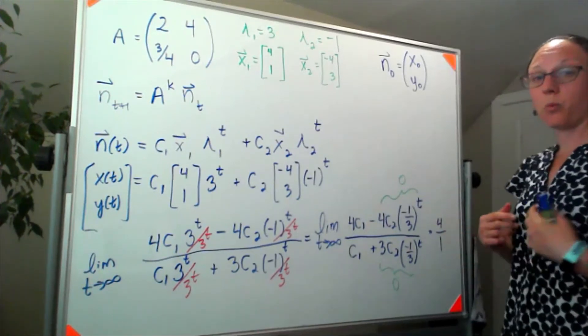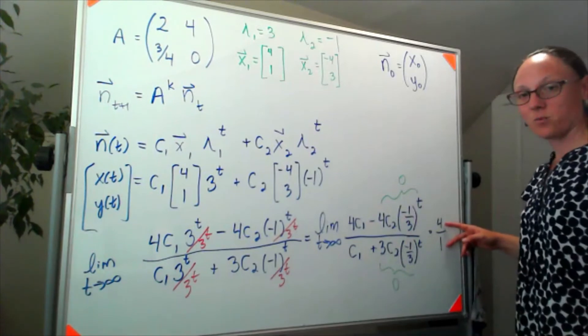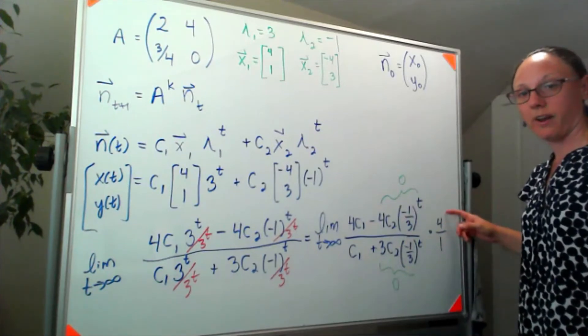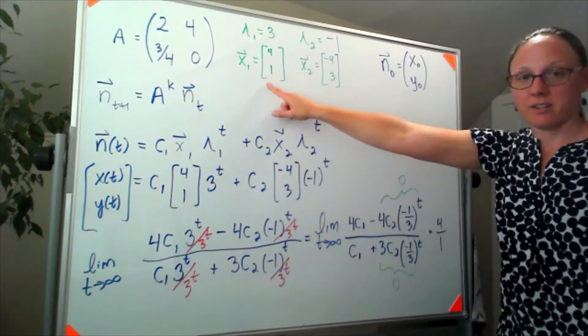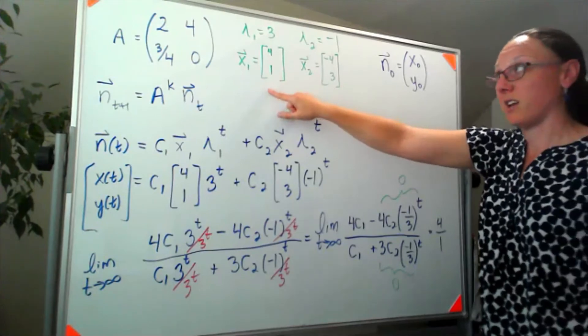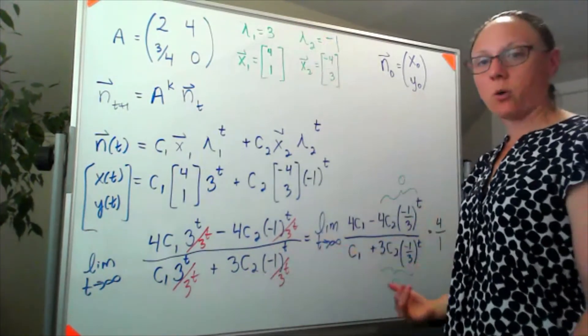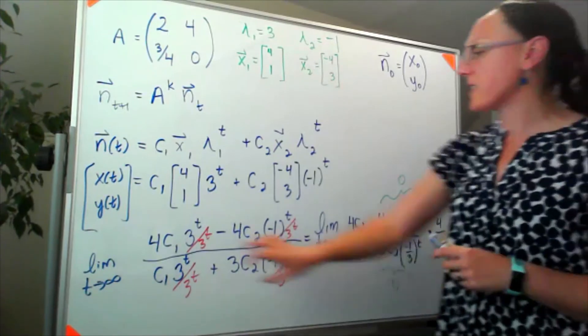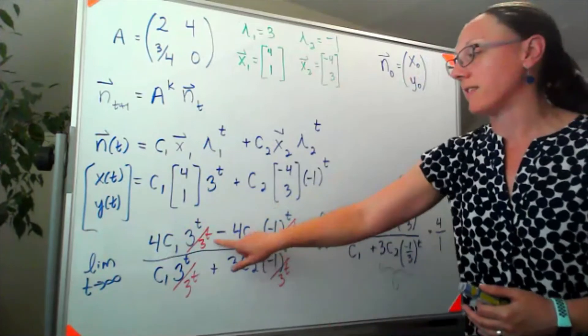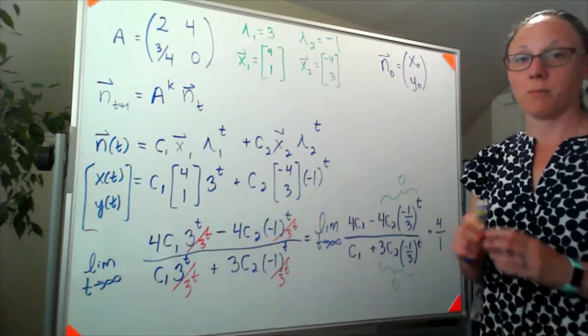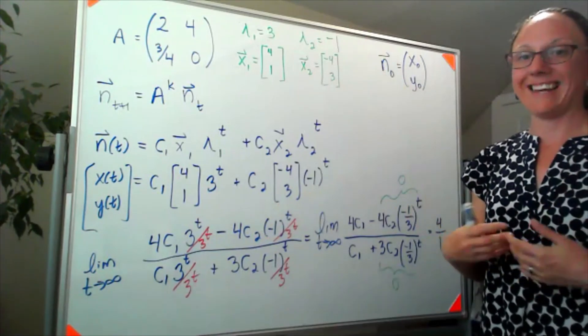So that means in the long term we expect to see this ratio of four to one, which matches the eigenvector associated with our largest eigenvalue. And that's always going to work out this way, because if I get down to this limit piece, I would always be dividing by the thing that's headed to infinity fastest, which is going to be whatever eigenvalue, absolute value of it, is the largest.